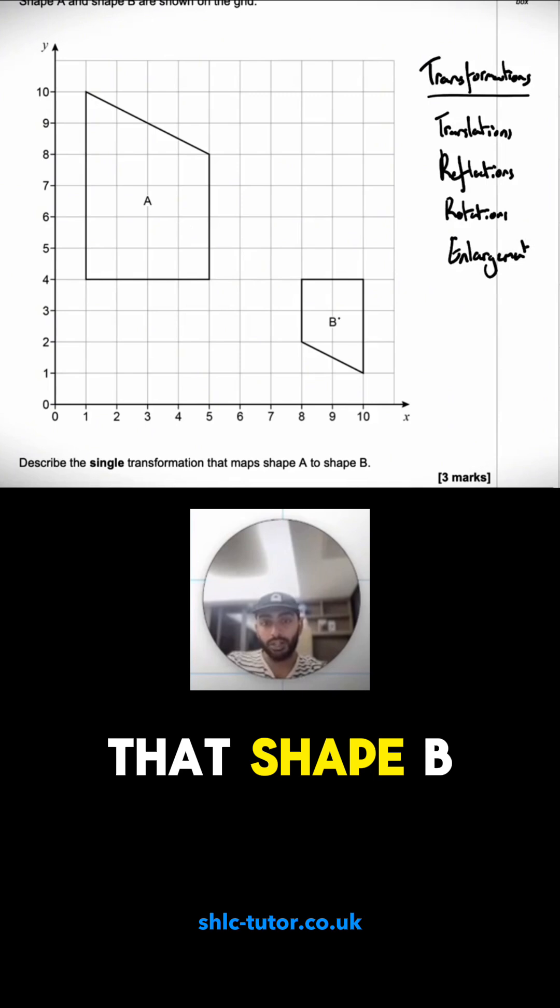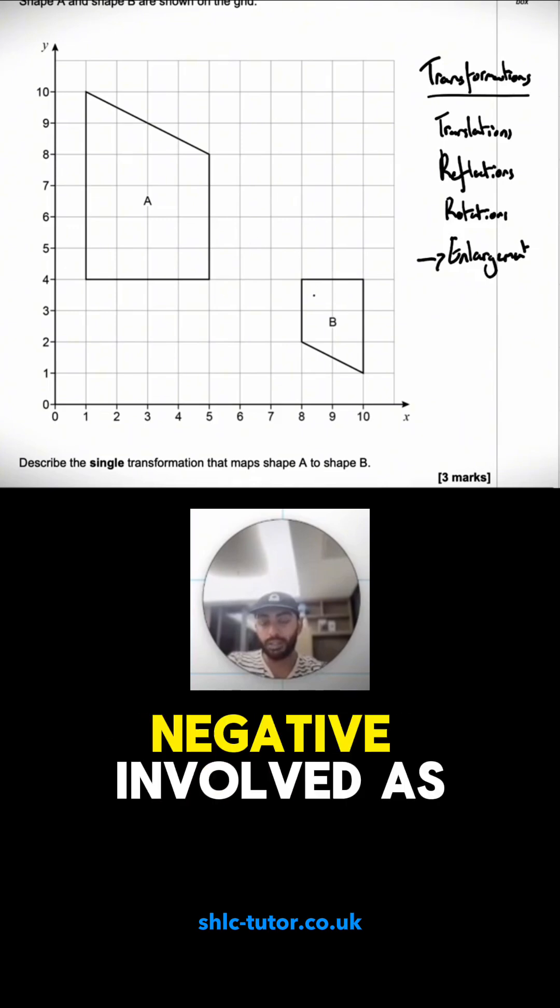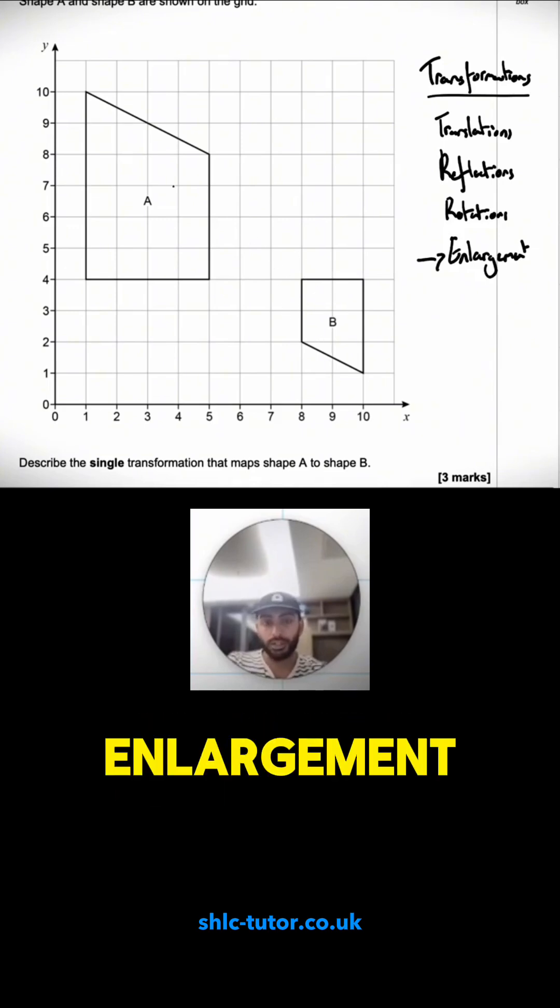I can see that shape B is smaller than shape A so it's going to be an enlargement with a fractional scale factor and it's also been rotated so there's going to be a negative involved as well. Let's first find the centre of enlargement.